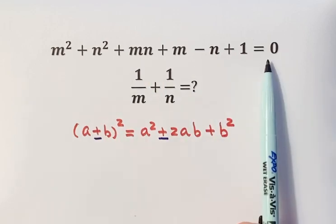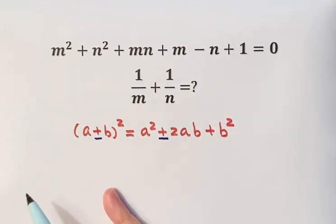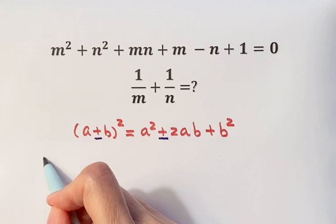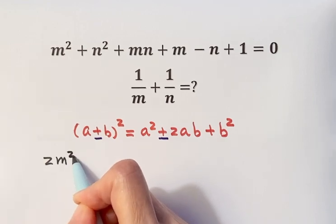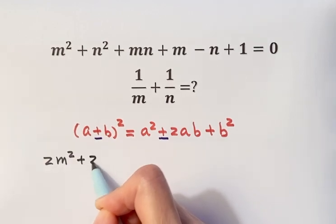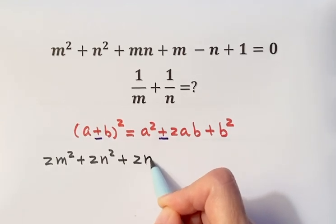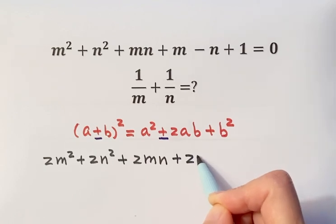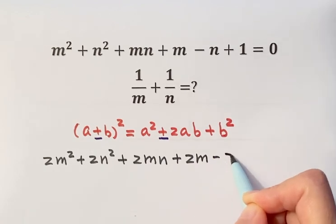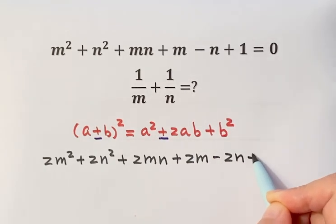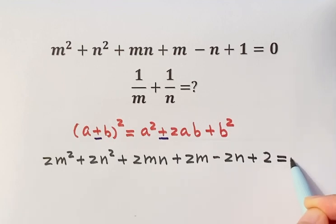So then we have 2m squared plus 2n squared plus 2mn plus 2m minus 2n plus 2 equals 0.